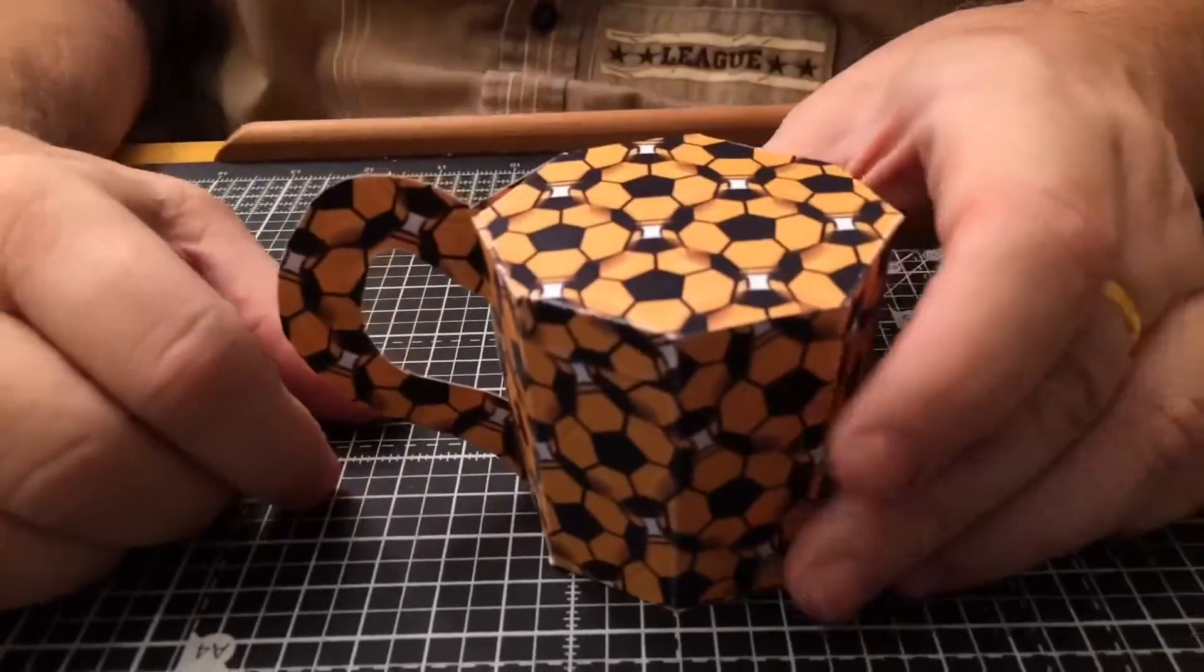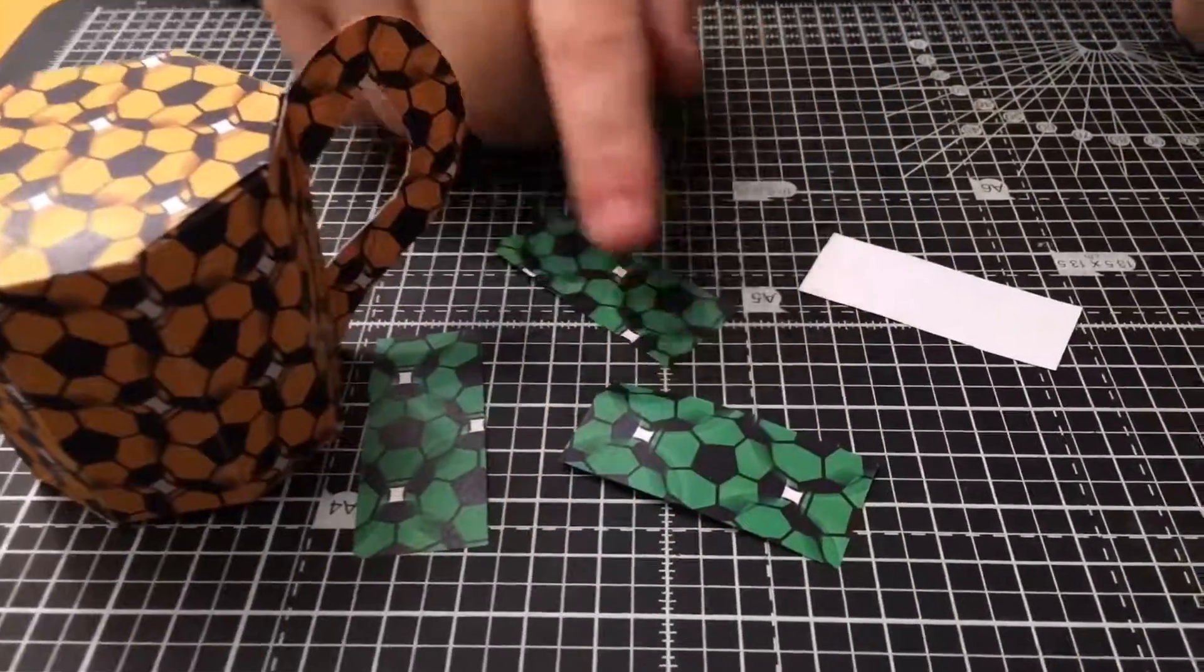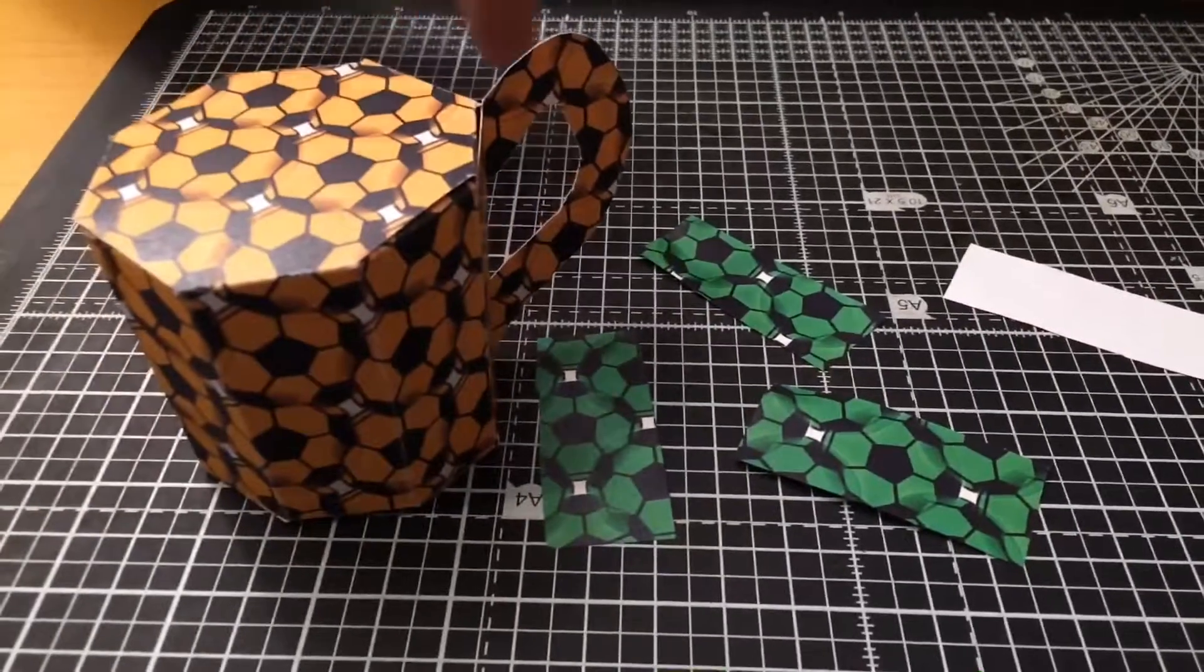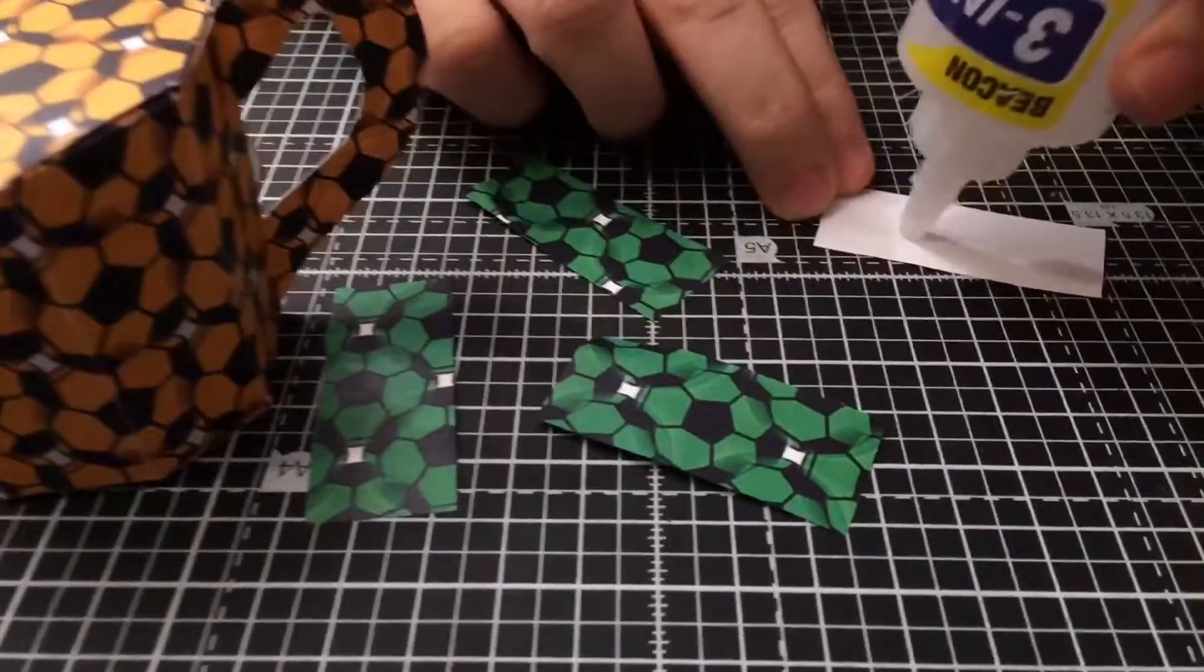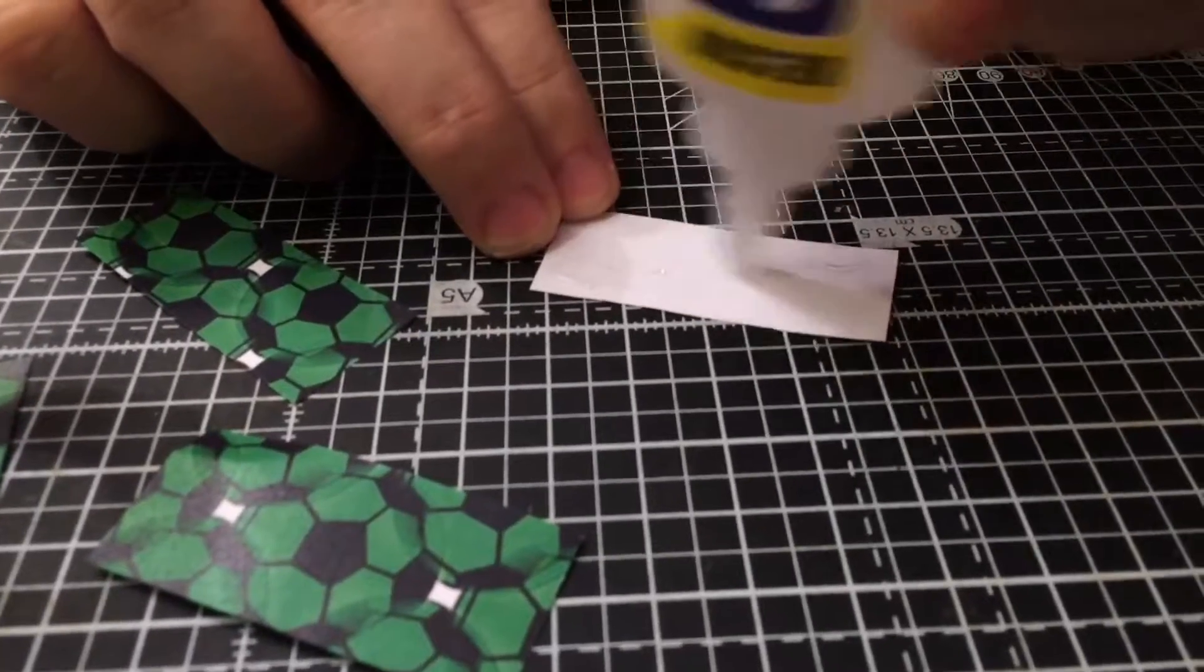I've cut out some strips of green that are going to go on the panels here. I've used the template to get the right size, and I'm just going to glue these on individually.